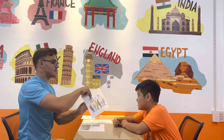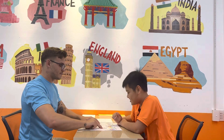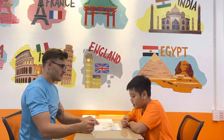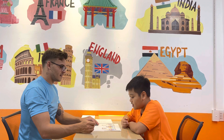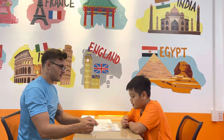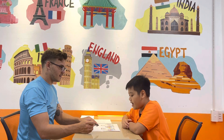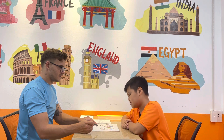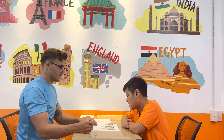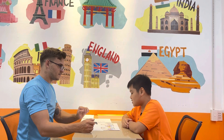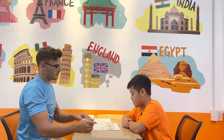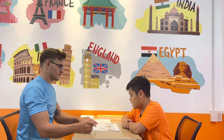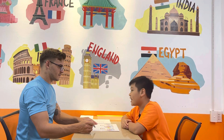Can you give me some more differences, please? Okay. In picture A, the boy's hair is yellow, but in picture B, the boy's hair is black.